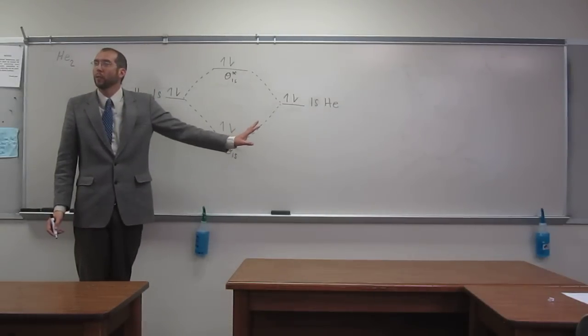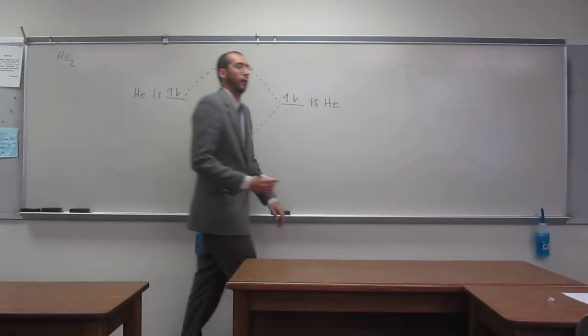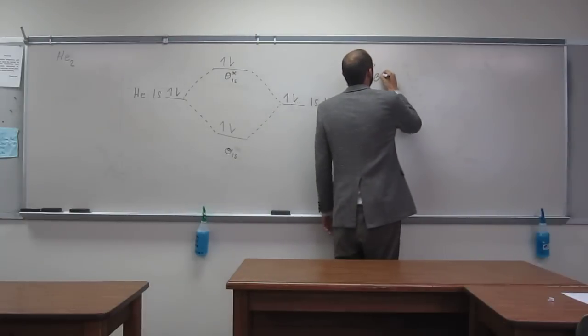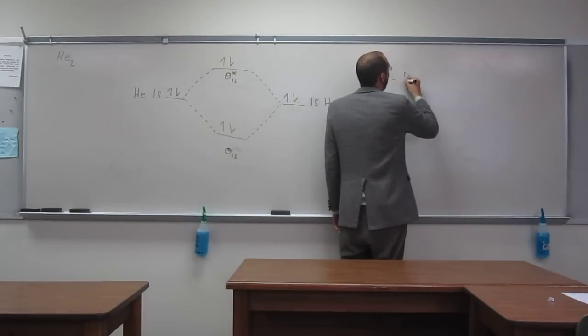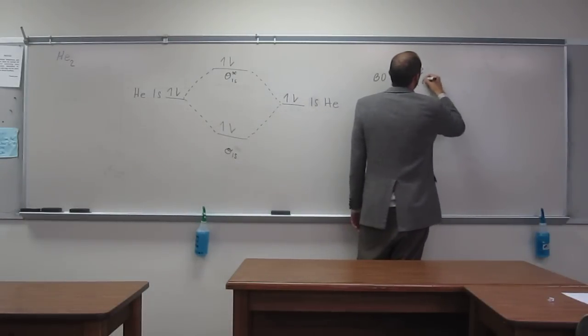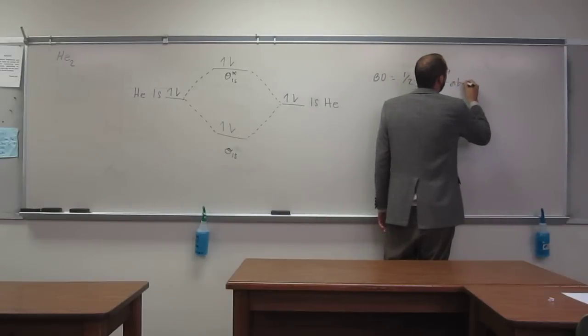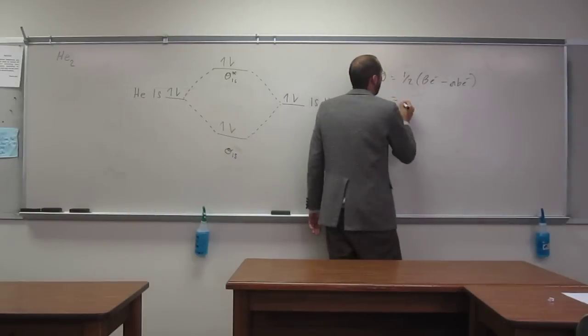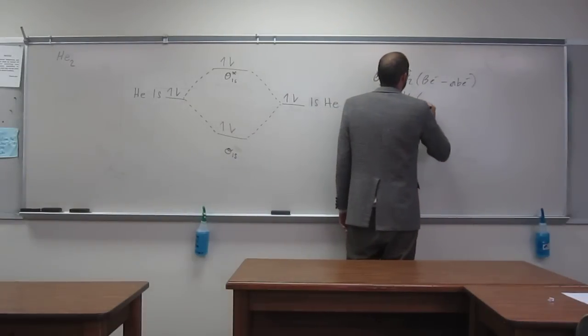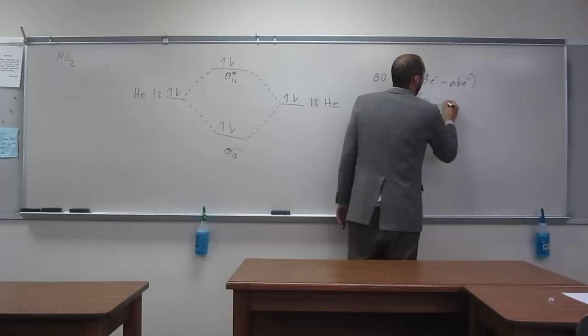So, would you guys predict this molecule exists or not? No. Yeah, it doesn't exist. Why? Because the bond order is one-half the bonding electrons minus the anti-bonding electrons. So, what do we have? One-half times two minus two.